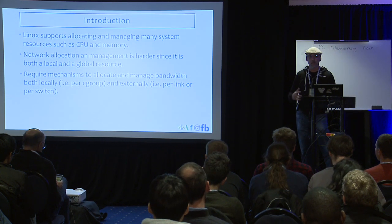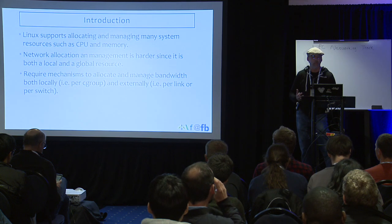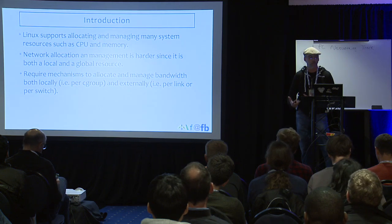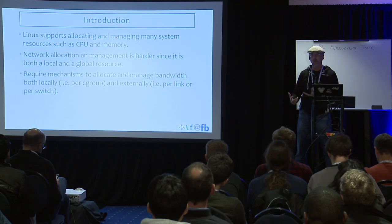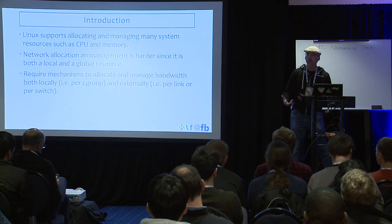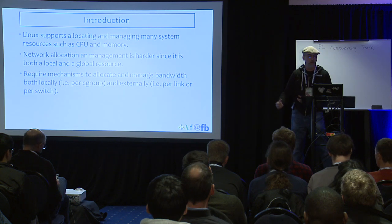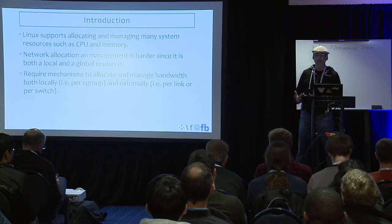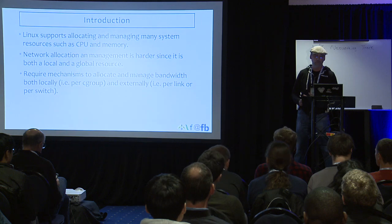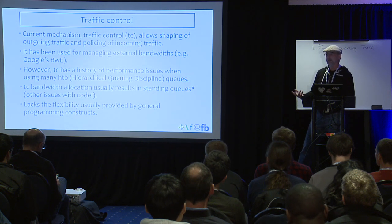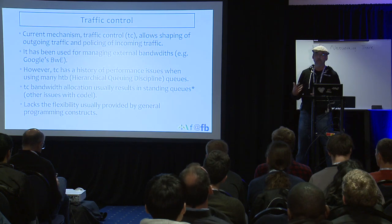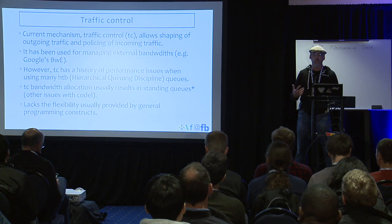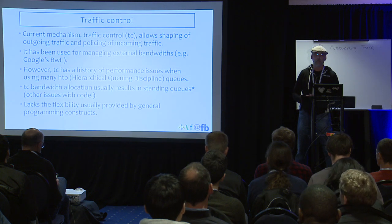Linux already supports allocating and managing many different resources such as CPU and memory. Network allocation is a little harder because it's not only a local resource, it is also a global resource. We do not only want to manage our egress bandwidth, but we may also want to manage bandwidth at different links in the network. So we require mechanisms to manage bandwidth locally and also externally. There's already a mechanism — traffic control — that allows us to shape outgoing traffic and to police incoming traffic, and it has been used for managing external bandwidth, like Google's bandwidth enforcer.